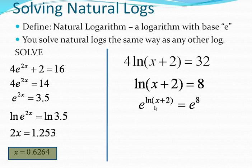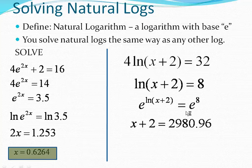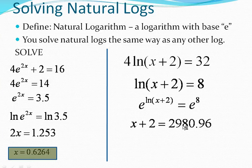This is that same rule when the bases are the same, because the base here for natural log is actually e. They cancel out. You're left with x plus 2 here. This, e to the 8th, is just straight up calculator. We put that in the calculator.